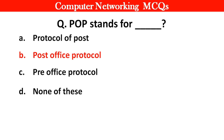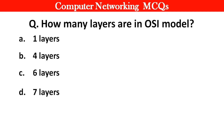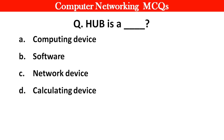Next question: How many layers are in the OSI model? Right answer is 7 layers. Next question: Hub is a — right answer is option C: Network Device.